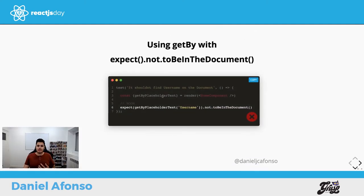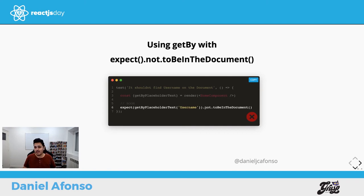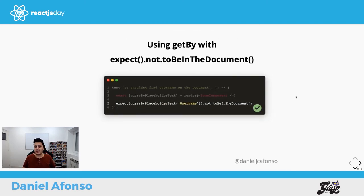Second mistake: using GetBy with expect().not.toBeInTheDocument(). The toBeInTheDocument assertion checks that something is not present in the DOM. But GetBy throws an error when it can't find a match, so your test will always fail before reaching the assertion. Instead of GetBy, use QueryBy — which returns null when it doesn't find what it's looking for.